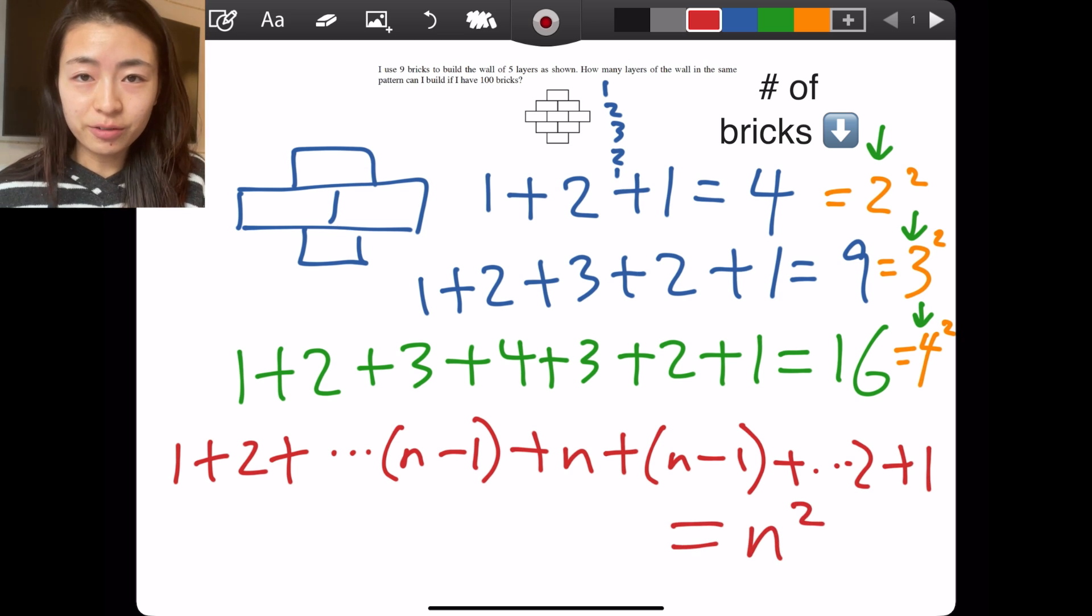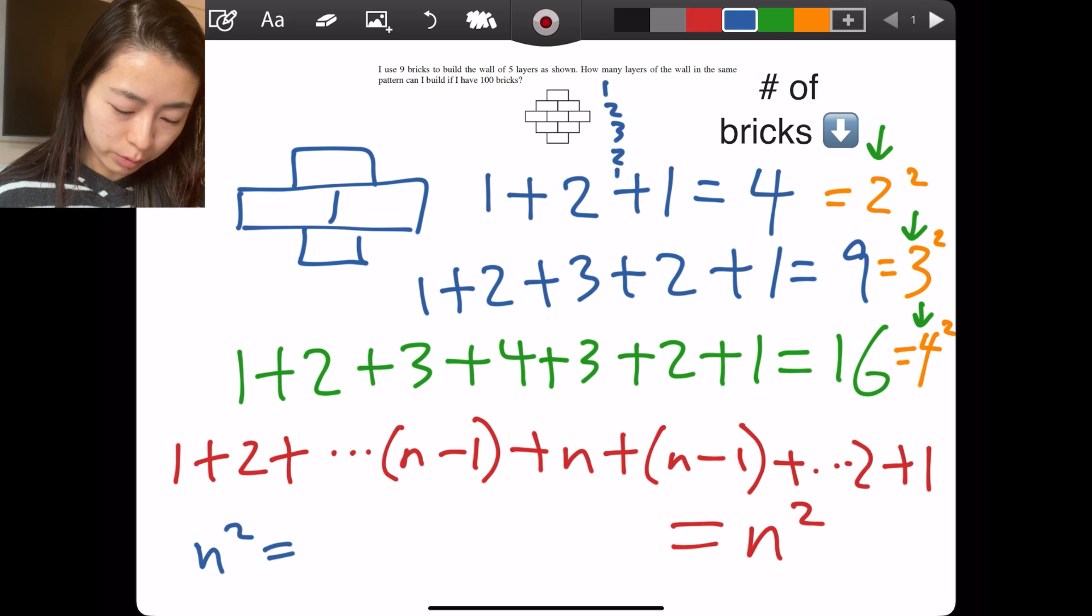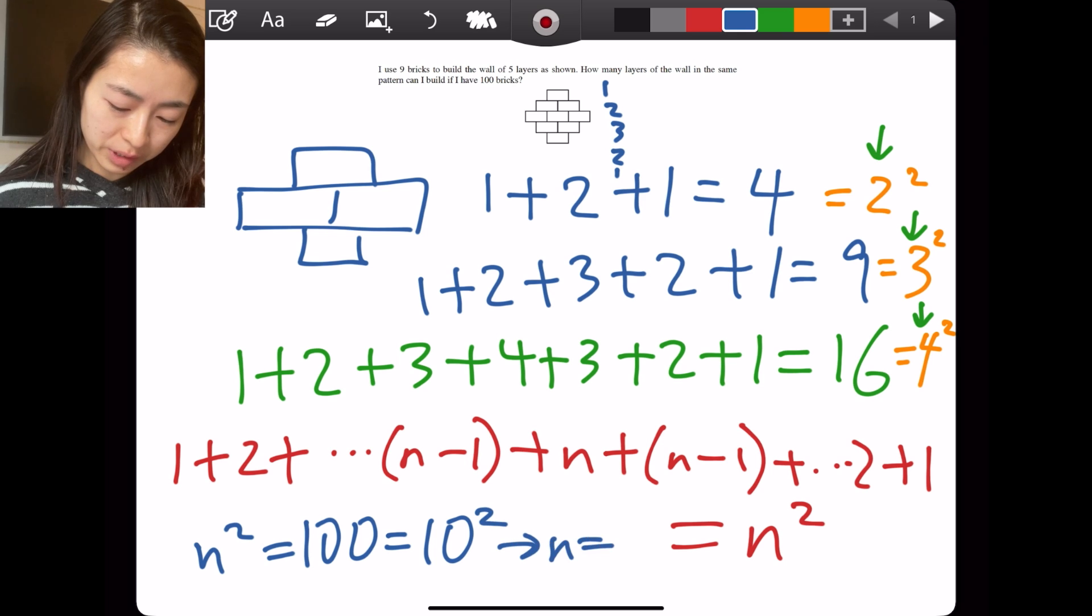Therefore, if we have 100 bricks, that means that our n² = 100, and that's 10 squared, so n = 10.